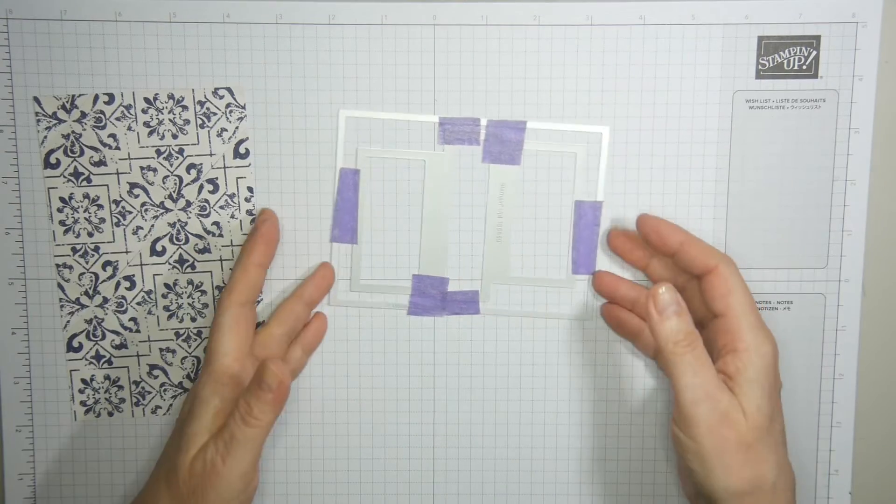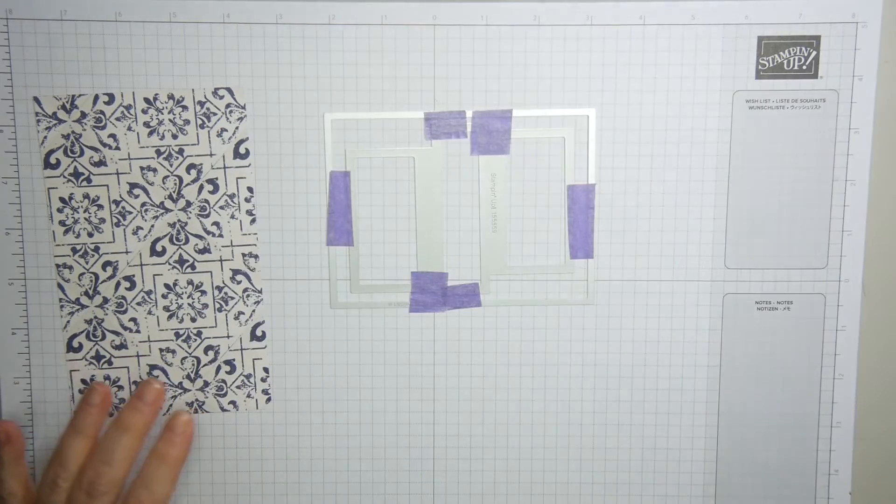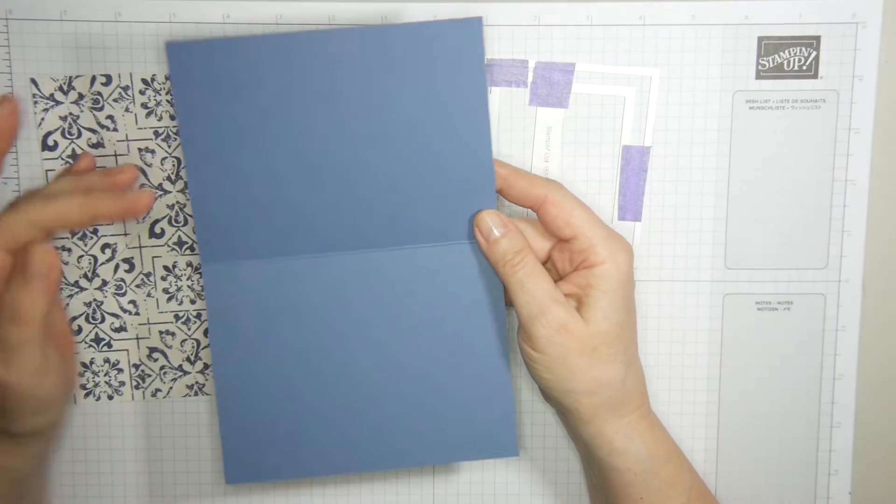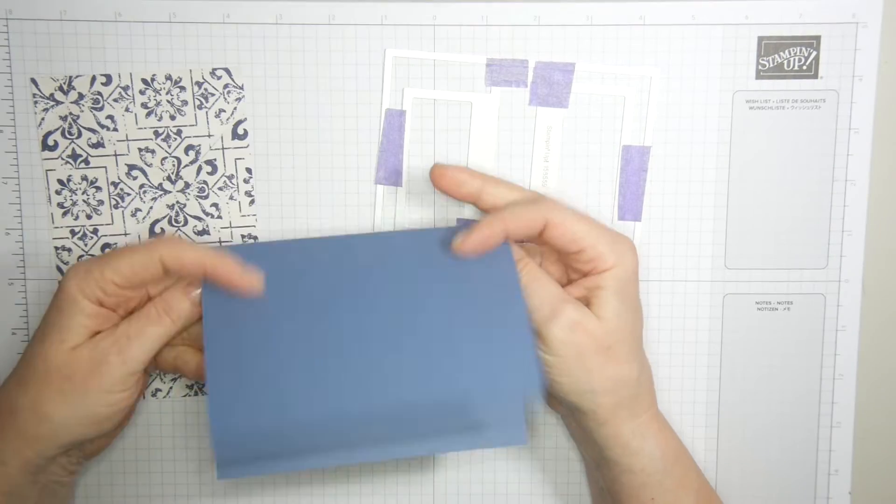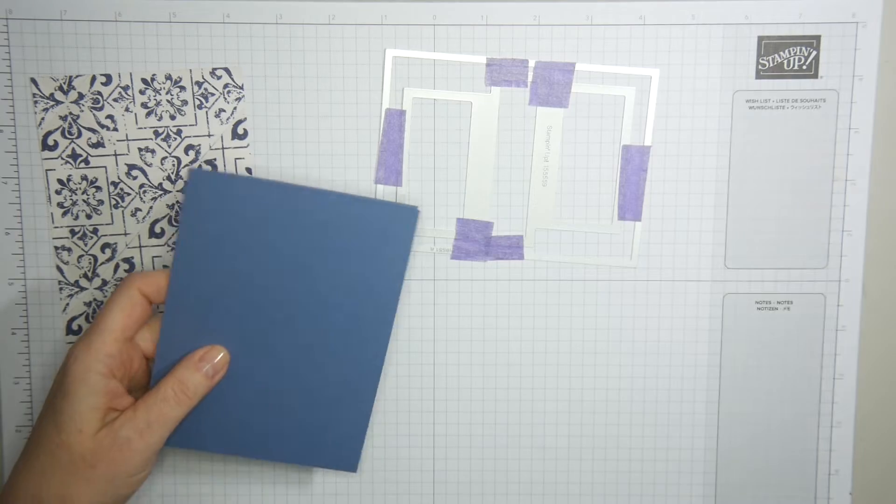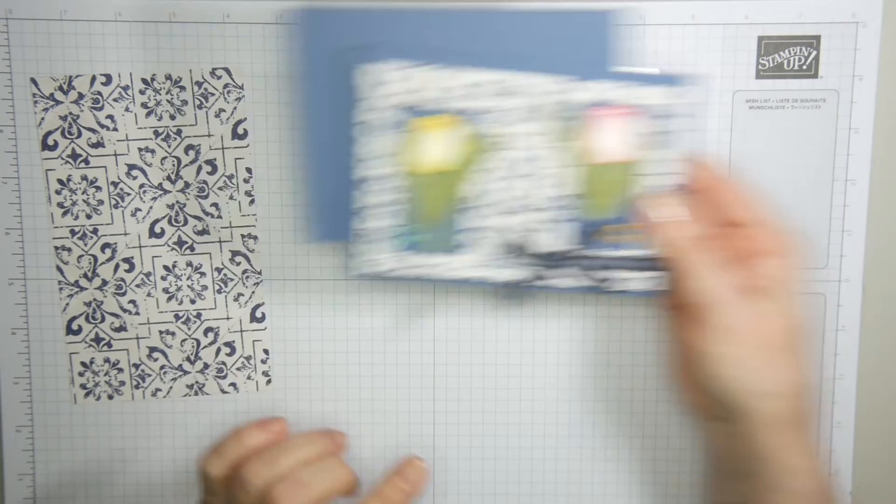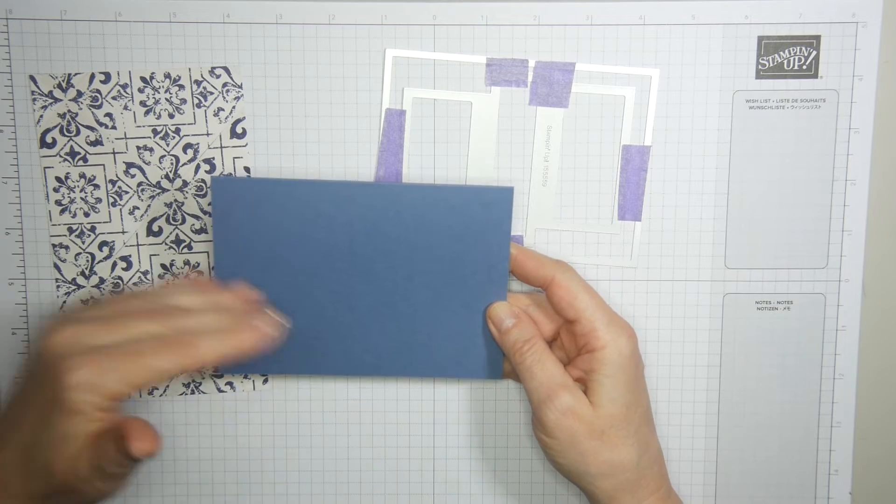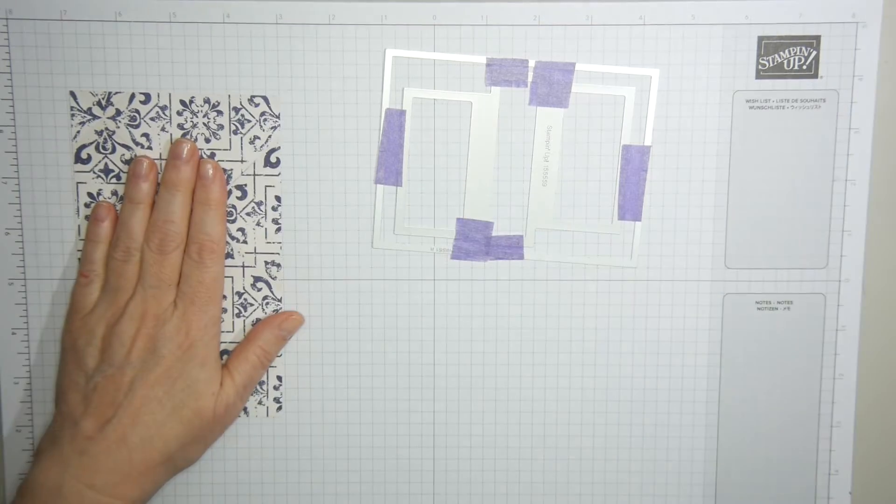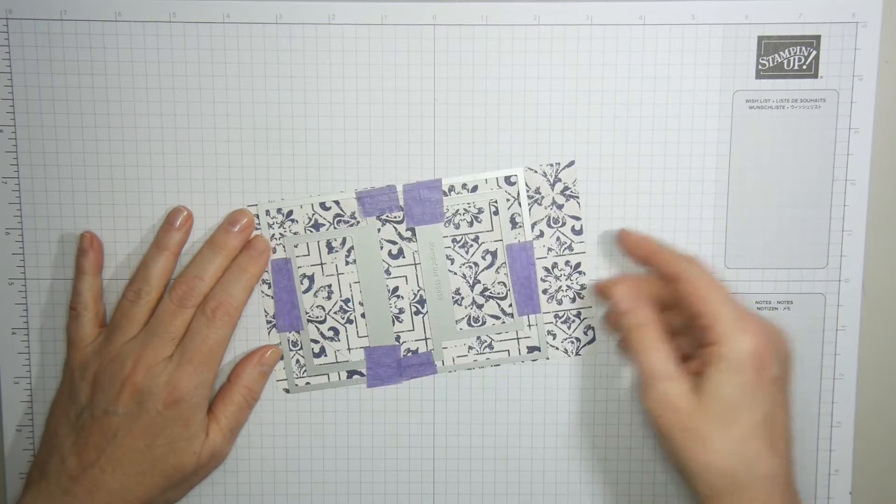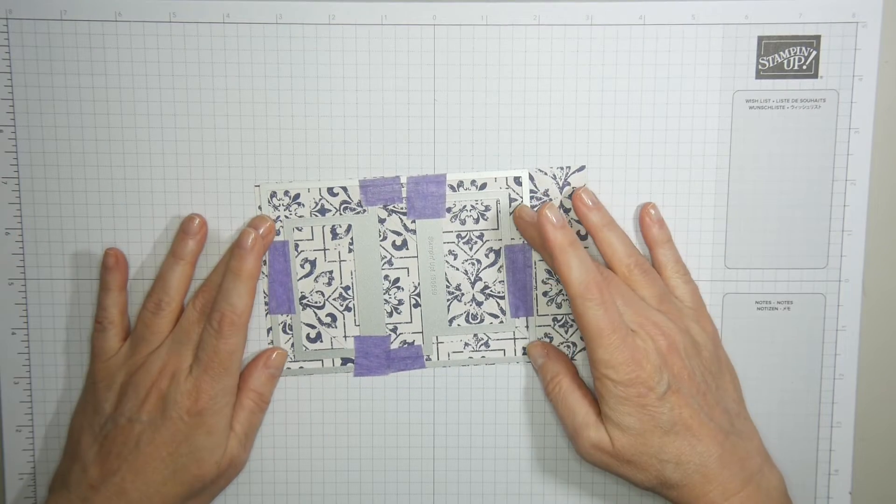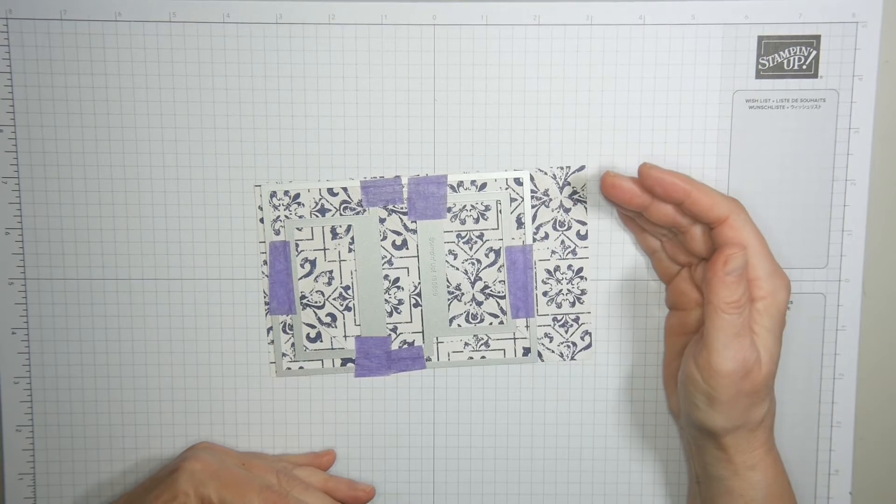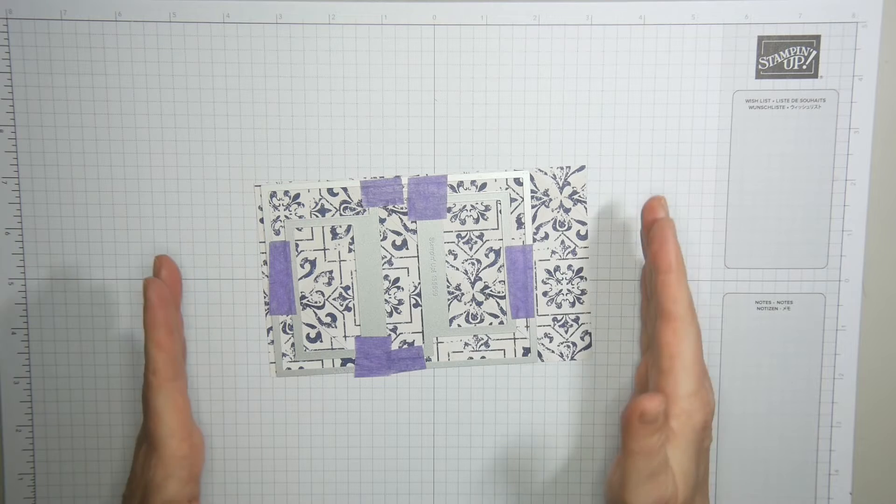I'm using this to die cut the paper and to die cut in Misty Moonlight as well. Your base card is Misty Moonlight, eight and a quarter by five and a half, and you score this at four and one eighth which is just going to be the right fit for this die cut. You're also going to need a piece of Misty Moonlight in the same size, four inches would do, and then designer series paper four inches by six, but five and a half works too. When I've done that I'll be back.